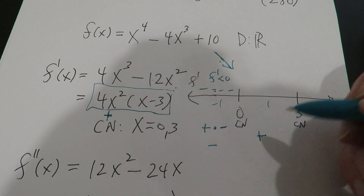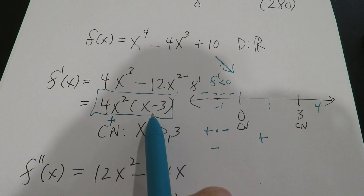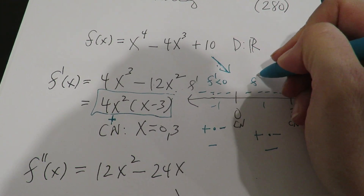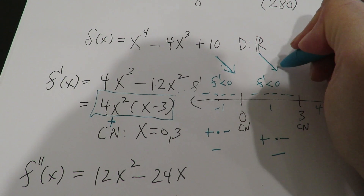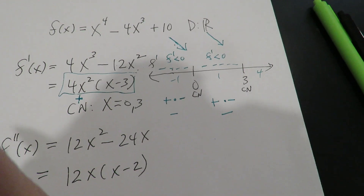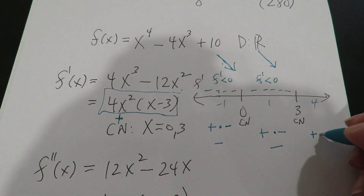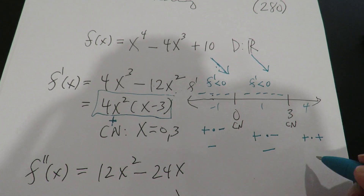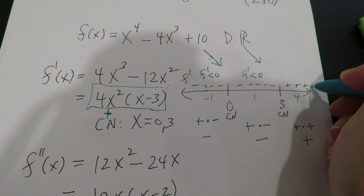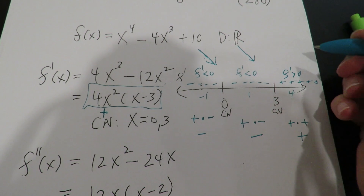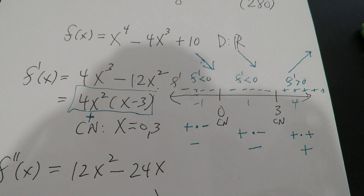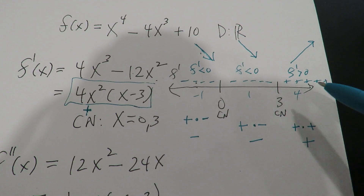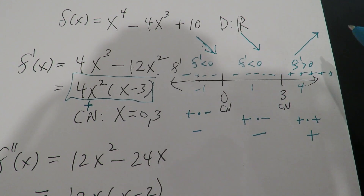When I plug in one, the second factor is negative two, so that's negative, and overall the first derivative is negative — the graph is still decreasing. When I plug in four, I get four minus three equals one, which is positive, so overall the first derivative is positive and the graph goes up. That completes the first step: I've identified where the graph is increasing and decreasing.